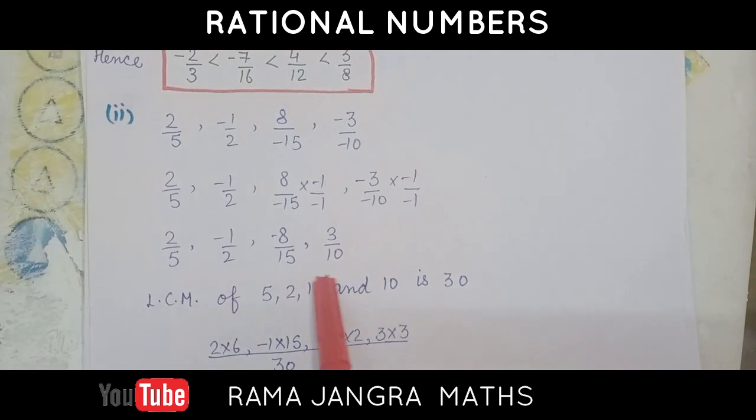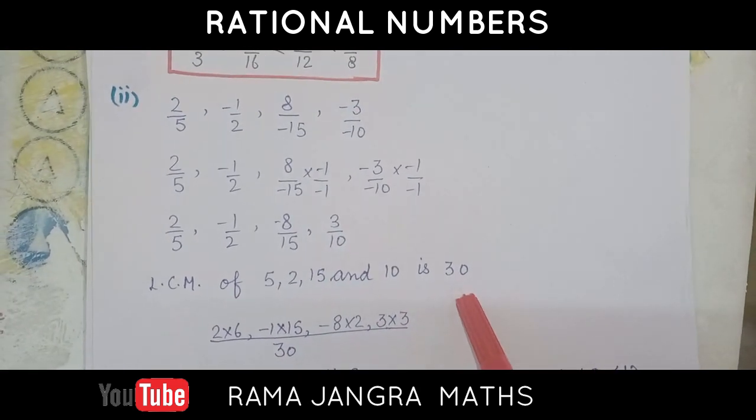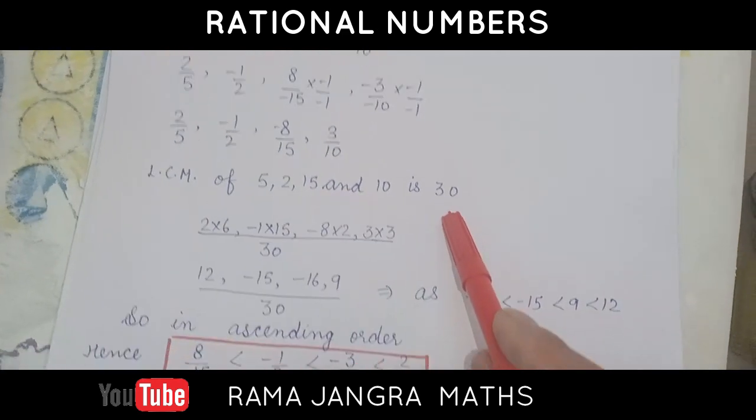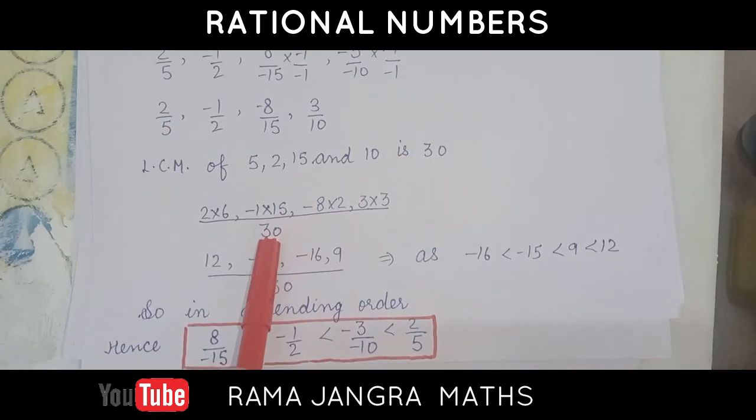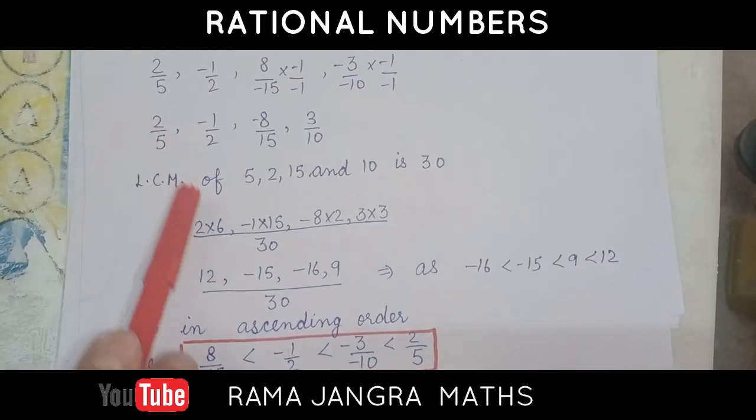With the same procedure, we have to take the LCM. LCM is 30. So, same. Here, divide by 5, which gives 6. Then, multiply by 2.